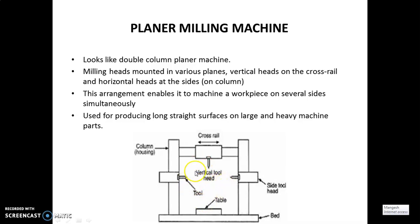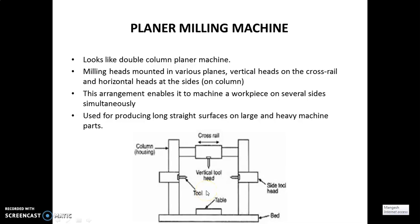This is a very versatile type of machine. As we know, milling machines are suitable for very high accuracy and good surface finish, which is why they have replaced many shaping and slotting machines. This arrangement enables it to machine a workpiece on several sides simultaneously. Heavy and large components are machined and it generally produces long straight surfaces.